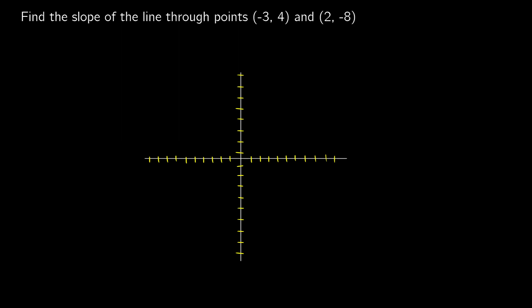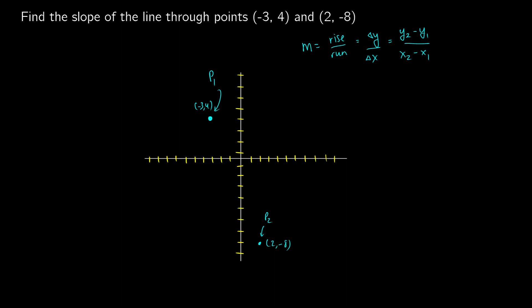Now let's do a slightly different question. We're given two points and we have to find the slope. We have the points negative 3, 4 and 2, negative 8. Slope is rise over run — the change in y over the change in x. This is (y2 minus y1) divided by (x2 minus x1). Our bottom-right point is point 2, and our top-left point is point 1, so we label them x2, y2 and x1, y1.